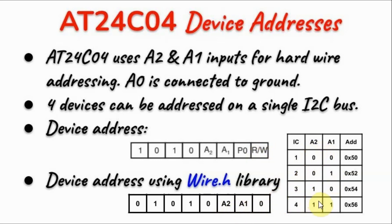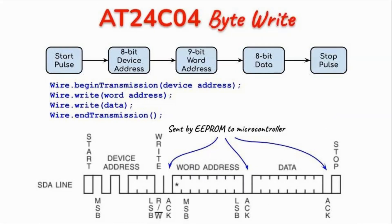Based on the truth table, we can generate 4 different addresses — this address for the first EEPROM and this address for the fourth EEPROM. The Arduino writes a byte to the EEPROM by first sending a start pulse to indicate the beginning of transmission, then sending the 8-bit device address to locate one of the 4 EEPROMs, then writing a 9-bit word address to locate the memory location out of the 512 locations, and then writing the 8-bit data into that location.